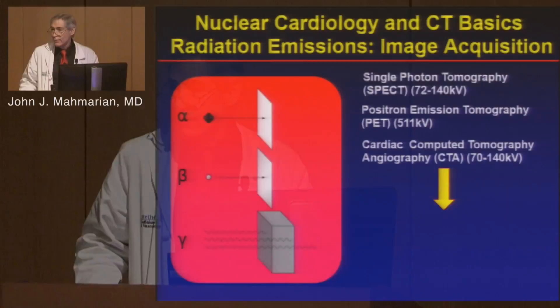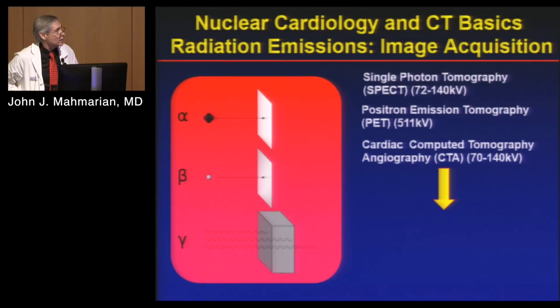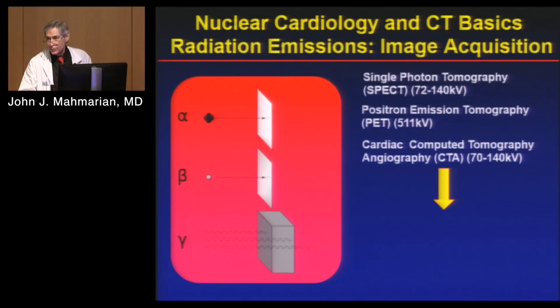When we think about single photon tomography and positron tomography (PET), with single photon tomography we use radio tracers in the 72 to 140 kV range. With PET, we use annihilation as a positron that annihilates at 511 kV, so it's a very high energy photon. With CT, we use kVs anywhere from 70 to 140 kV. We're looking at gamma rays here, because we can't image alpha particles — they're stopped by a piece of paper — and we can't image beta particles, because they're basically electrons stopped by a piece of glass.